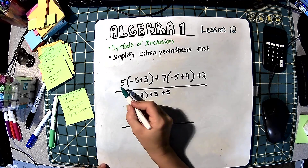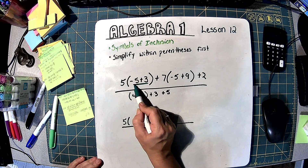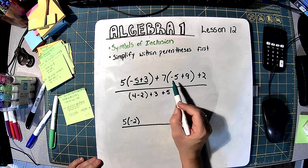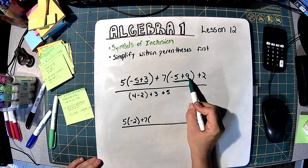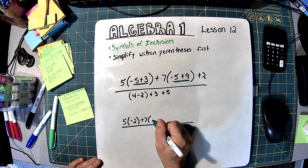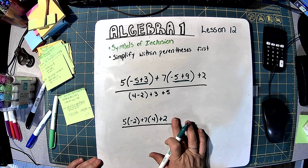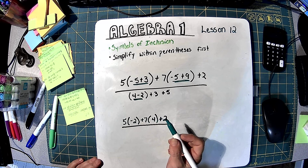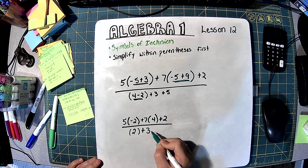For the numerator: bring the first 5 down, then 3 minus 5 is negative 2. Plus 7 in parentheses, and inside: negative 5 plus 9 — same as 5 minus 9 — which is 4, positive 4. And then plus 2. For the denominator: 4 minus 2 would be 2, plus 3, plus 5.